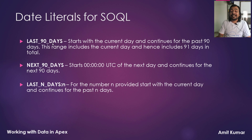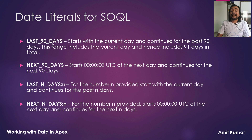Last N days, where N is the number provided, starts with the current day and continues for the past N days. You can provide any numeric value in place of N. Next N days, for the number N provided, starts 12 AM UTC of the next day and continues for the next N days.